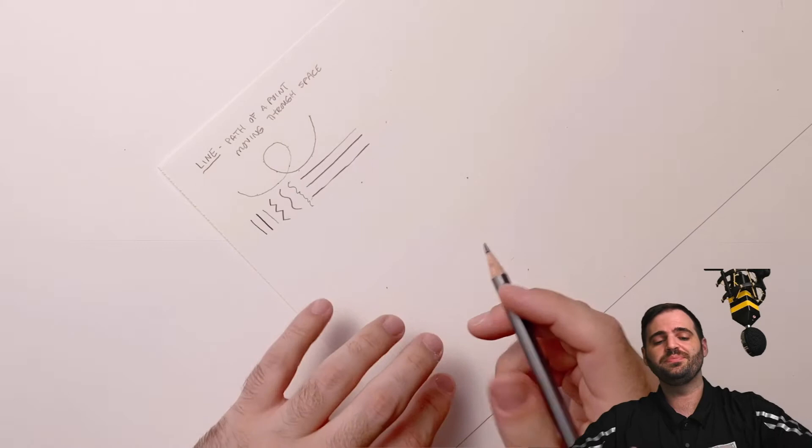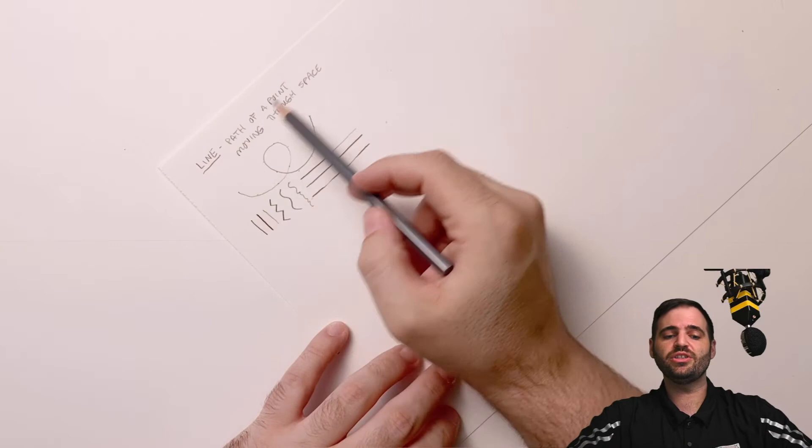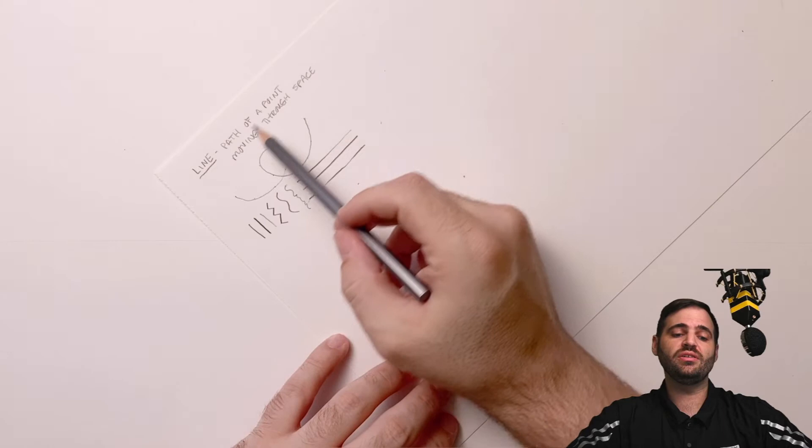For today, we're just covering the basics of the elements of art. So we have line, which is the path of a point moving through space. We have different types of lines.